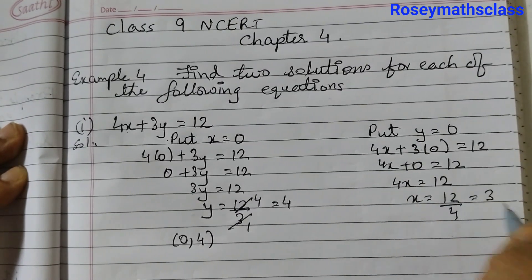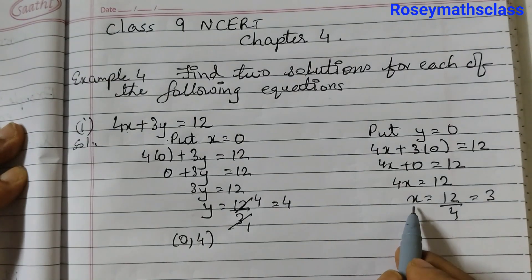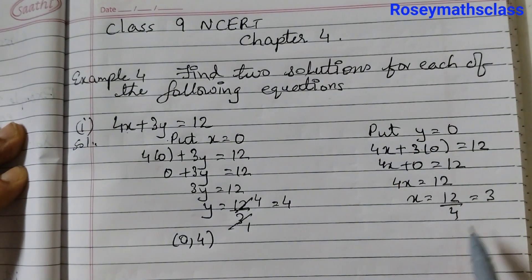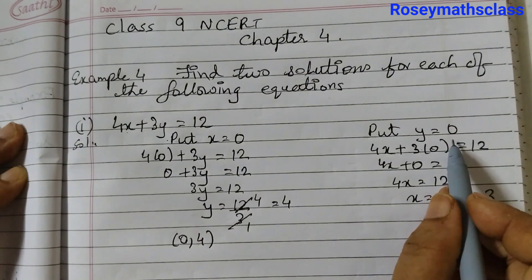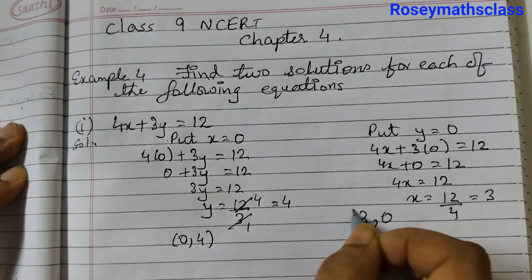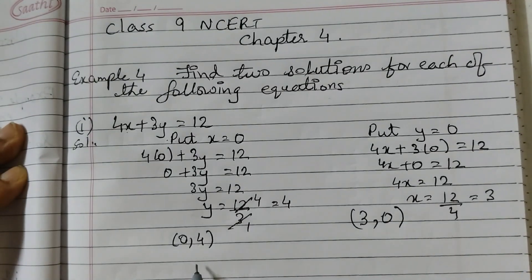4 comes this side and that is equal to 3. Now this is x and this is y. So when you write it the answer will be 3 comma 0. It's not 0 comma 3. It's 3 the x value first and then the y value. So these are the two required solutions for the first one.